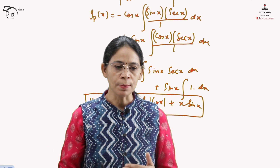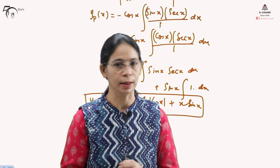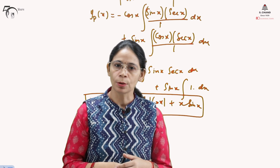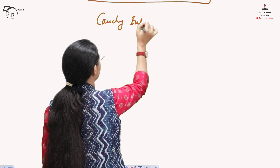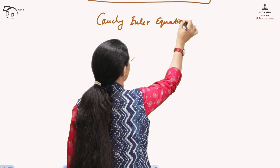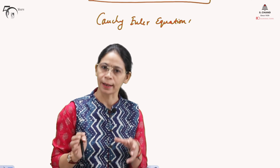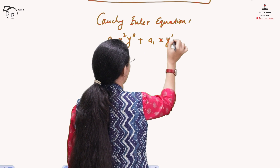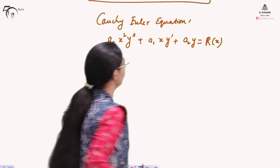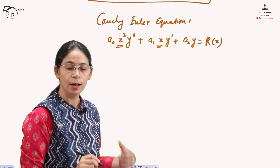Sometimes differential equations are not directly in the standard form but are reducible to it. We will study one such case called the Cauchy-Euler equation. The Cauchy-Euler equation is a linear differential equation reducible to a linear ODE with constant coefficients. For a second-order case it has the form: a₀x²y'' + a₁xy' + a₂y = r(x).